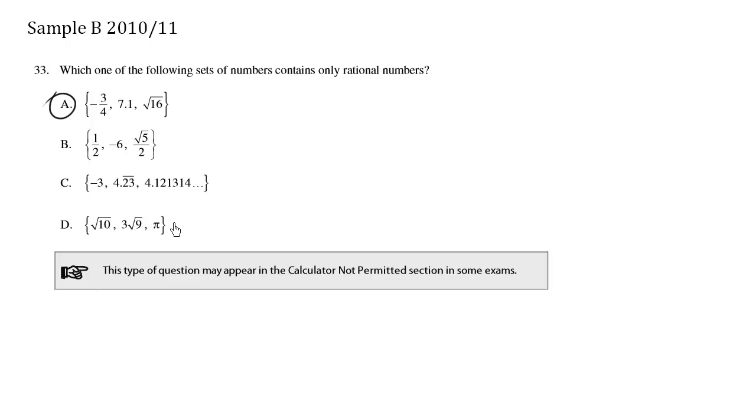And here we have pi, which is also irrational. So this square root of 9 part is actually rational, but this is irrational, as well as this.